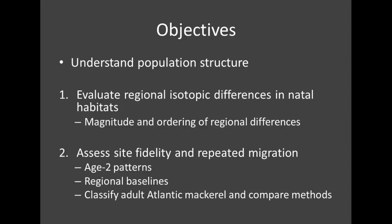Getting back to our project, the major question is to understand the population structure of Atlantic mackerel. We're doing this in two steps. First, we'll look at the different natal habitats and look for regional isotopic differences between them, which would set up isolation between the groups and give us the potential for different contingents to exist. Second, we'll look at older fish to assess site fidelity and the presence or absence of repeated migration, which should confirm that those natal habitats confer different migratory patterns and that contingents remain fairly separated.